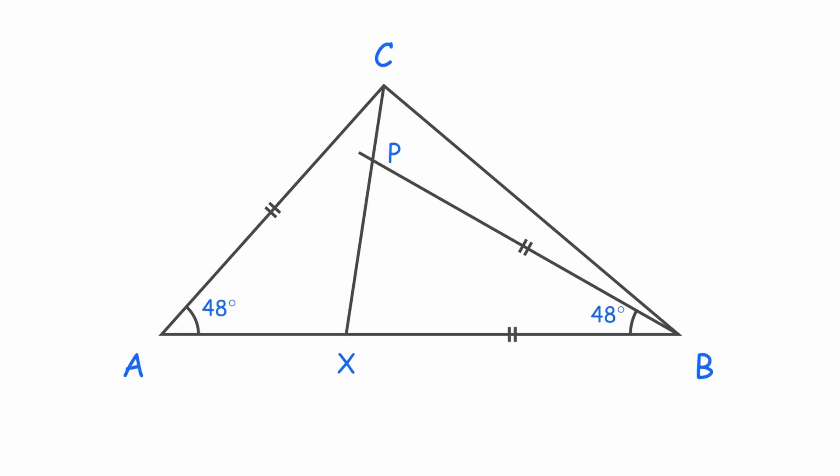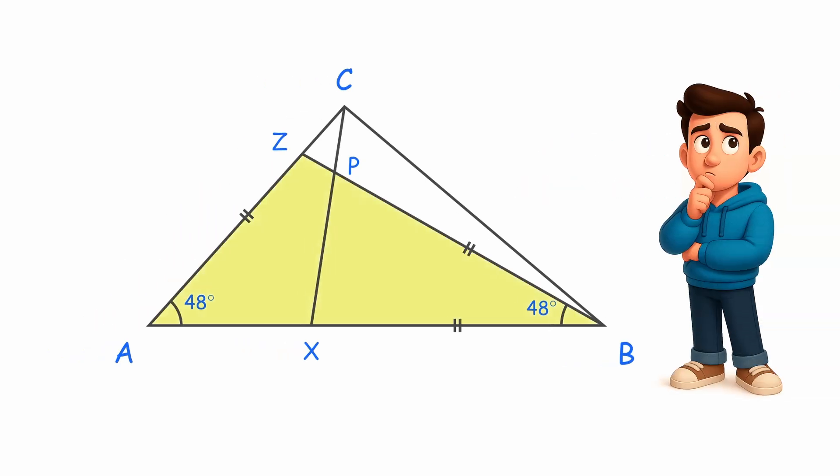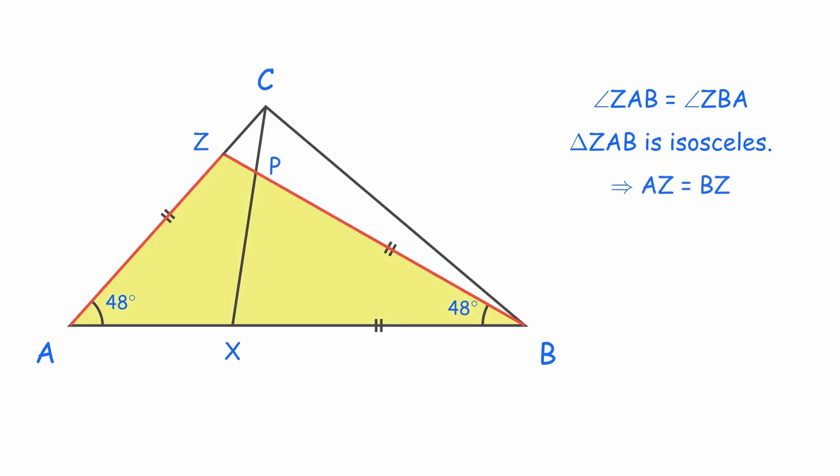If we extend BP to meet AC at a point Z, with both base angles equal to 48 degrees, then triangle ZAB becomes isosceles. Looks a bit suspicious, doesn't it? Let's verify. We can say AZ equals BZ, using the properties of isosceles triangle.